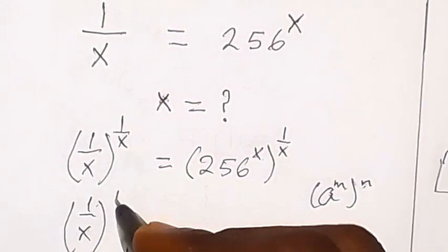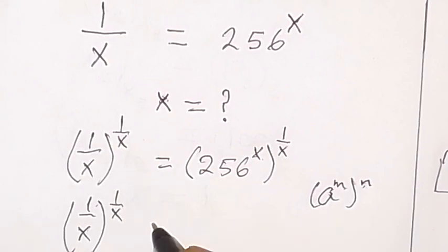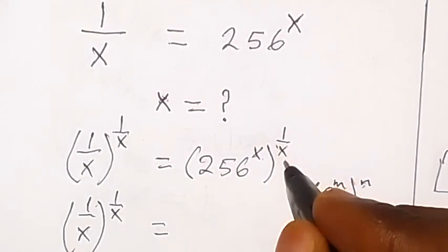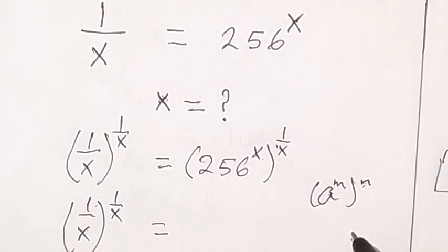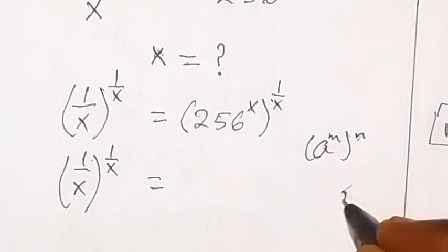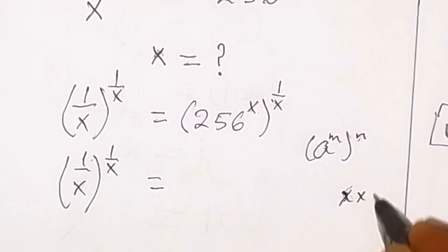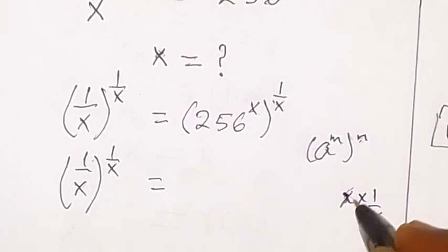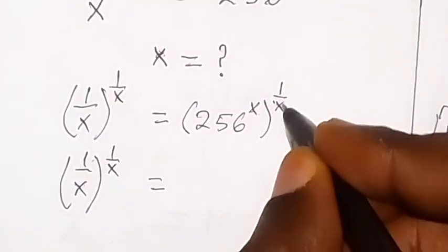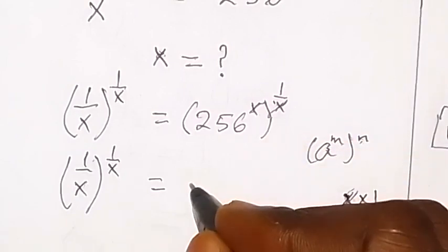We have 1 over x raised to power 1 over x. We cancel x here, just like we are multiplying. We have x times 1 over x, x cancels x, so this x cancels this x.